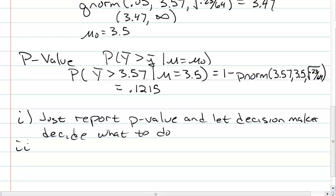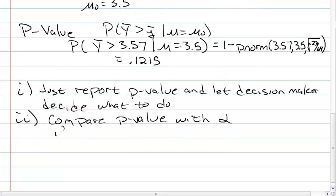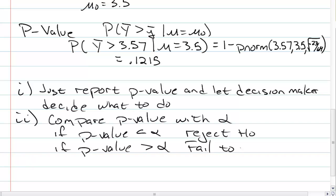For a second thing, compare the p-value with the alpha. So if the p-value is smaller than alpha, you reject the null hypothesis. If the p-value is larger, you fail to reject the null hypothesis.